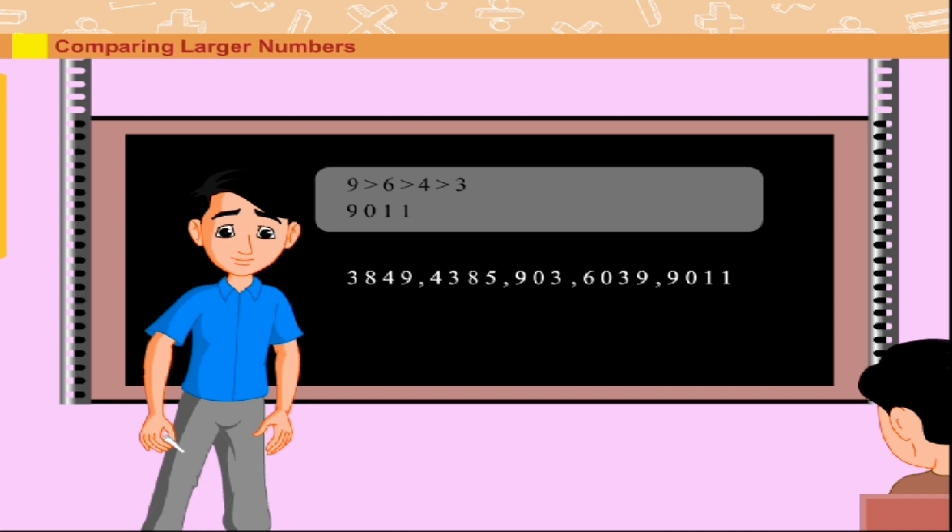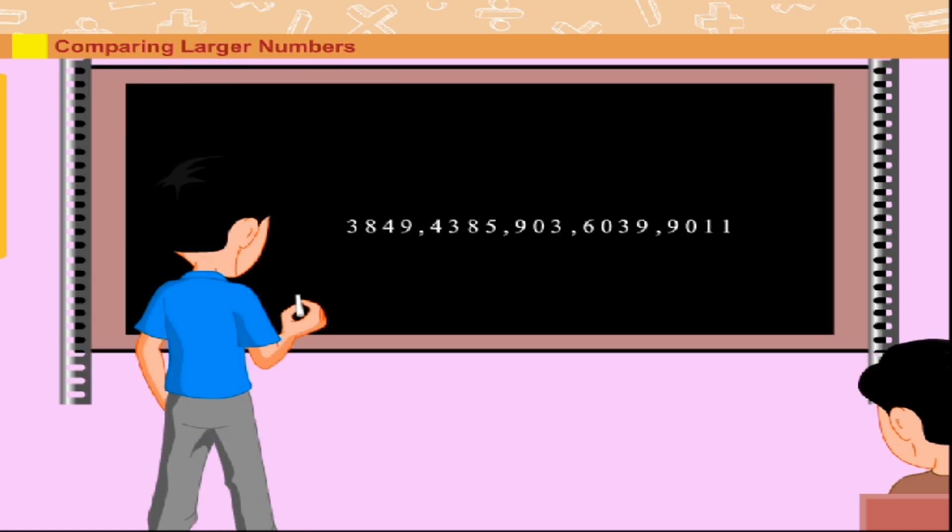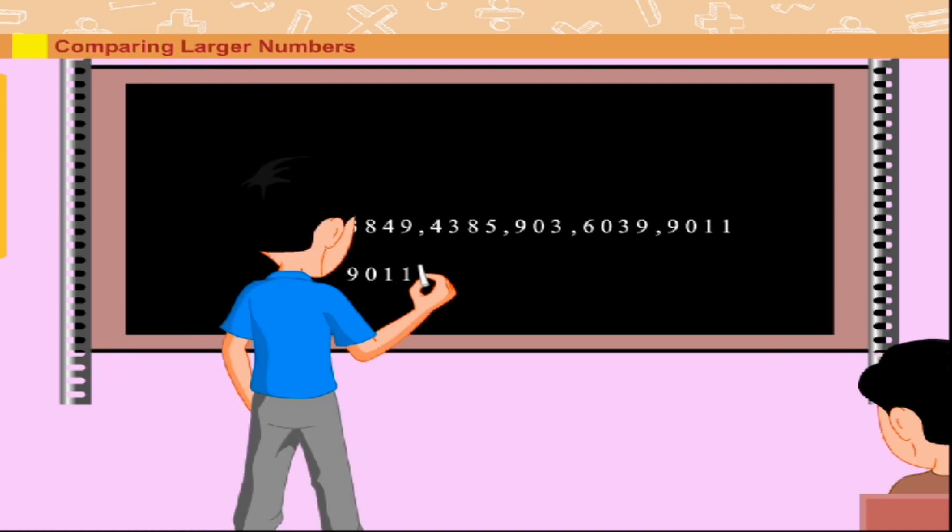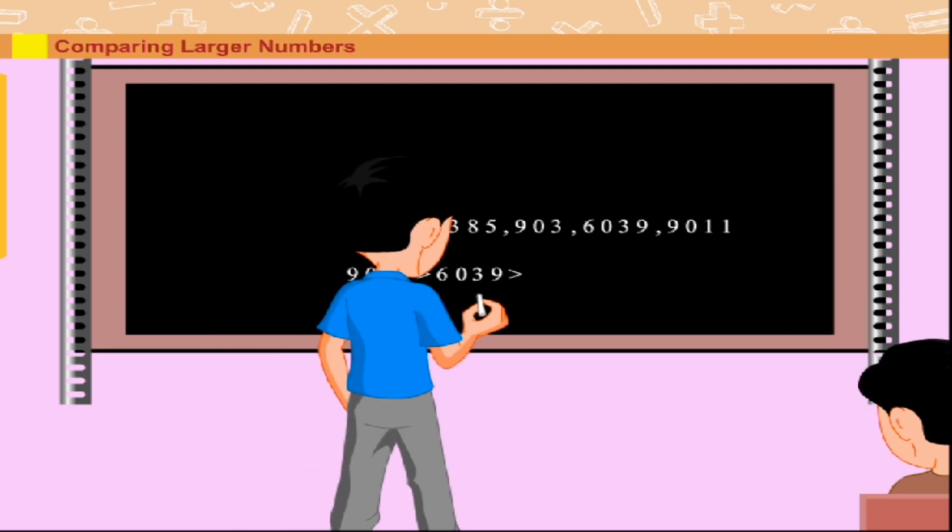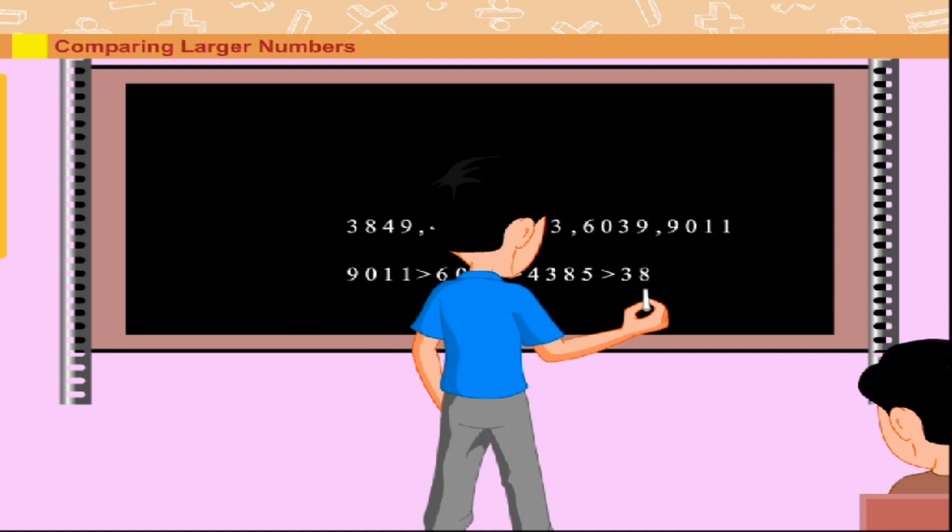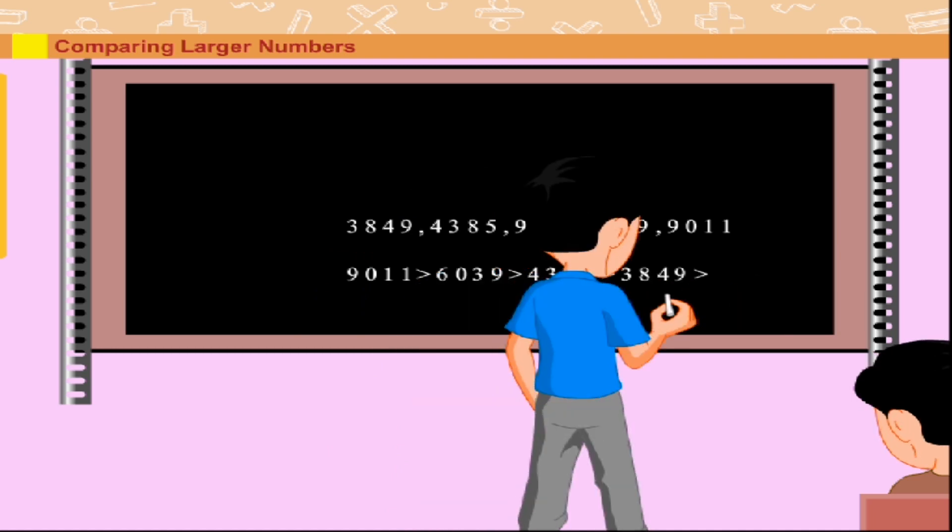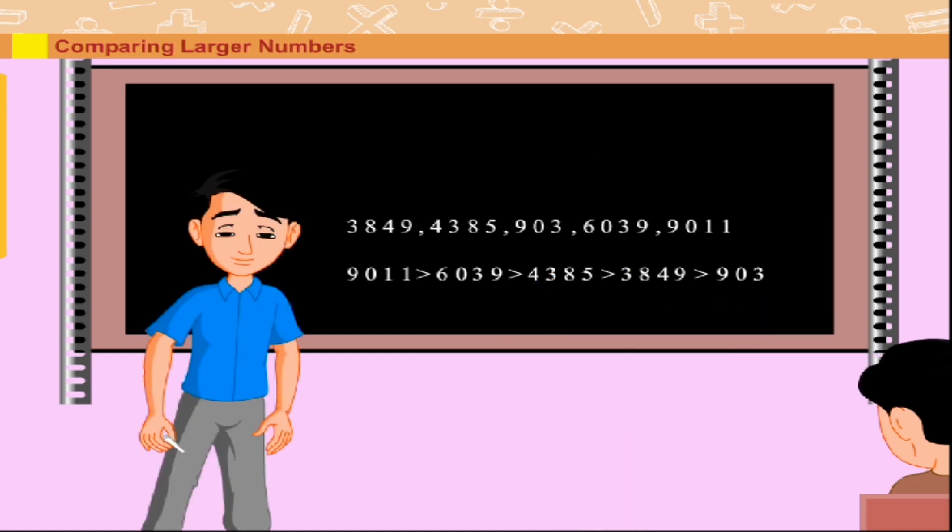So, 9011 is greater than 6039 is greater than 4385 is greater than 3849. As 903 is the smallest number, he happily writes 9011 is greater than 6039 is greater than 4385 is greater than 3849 is greater than 903. Well done Mohan!